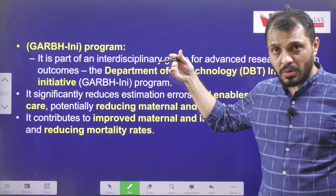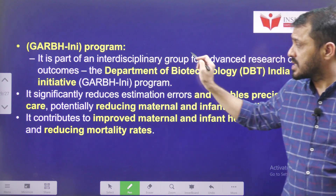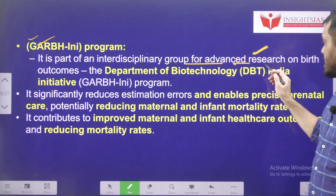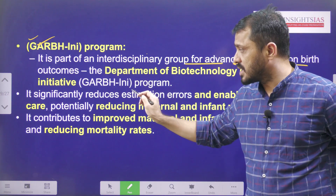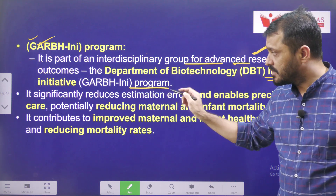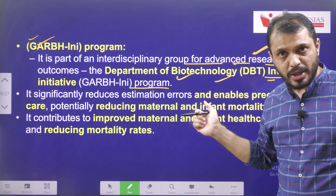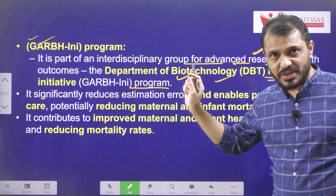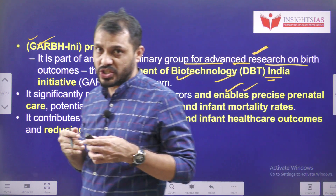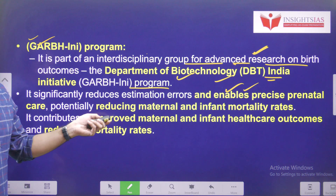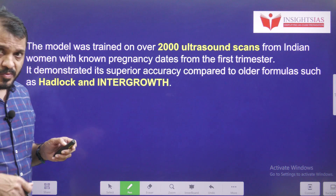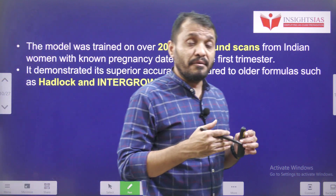The GARBINI program stands for Advanced Group for Research on Birth Outcomes — India Initiative, and this initiative was taken by the Department of Biotechnology. The main objective of this program is to reduce various estimation errors related to the gestational period, and to enhance prenatal care as well as maternal and infant health care.